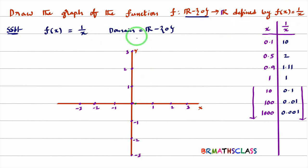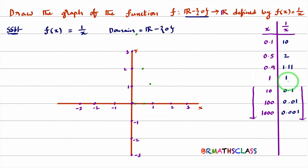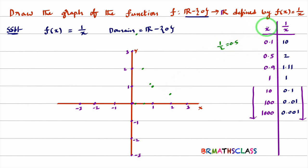When x = 0, the function is not defined. For x = 0.1, the value is 10, so it starts from here at 10. For x = 0.5, we get 2, so the point (0.5, 2) is plotted here. For x = 0.9, we get approximately 1.11, plotted here. When x = 1, 1/x = 1, so the point (1, 1) is here. When x = 2, 1/2 = 0.5, so the point (2, 0.5) is plotted here.